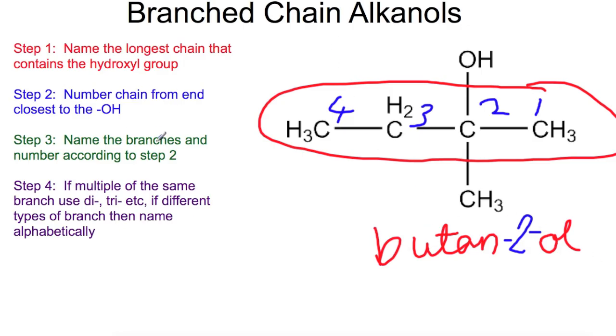We're going to name the branches and number them according to the numbering that you've already carried out. So you don't re-number for the branches. So our branch here all we have is this one little branch with a single carbon. So that would be a methyl group. Okay and our methyl group is also on carbon 2. So we're going to have 2-methyl butan 2-ol.